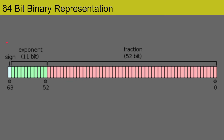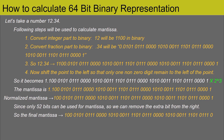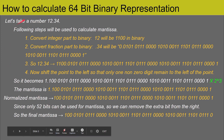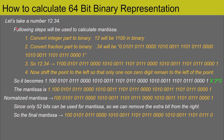We will go through an example and calculate the fraction or mantissa and exponent from a number, then combine them to get the final 64-bit binary representation in IEEE 754 standard. I have taken the number 12.34 and outlined the steps we are going to follow to convert this floating point number to the 64-bit binary representation.